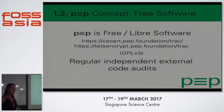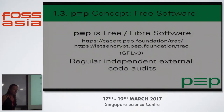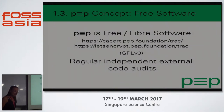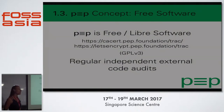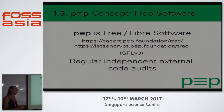Another part of the concept is that it's free software. If you want to do crypto, it has to be free software — otherwise it's not trustworthy at all. You can find the code under these URLs; you can see where we're coming from. It's GPL. We do regular independent external code audits. There's been one code audit on the engine so far, and it will be audited before every new release, then fixed, then audited again, then released.